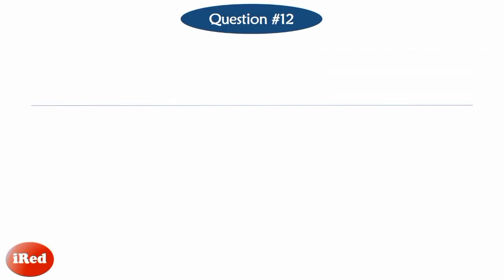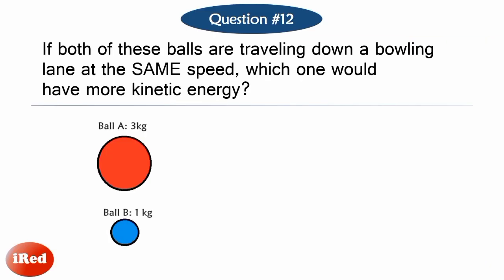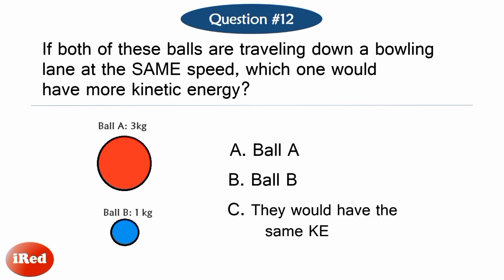Number 12. If both of these balls are traveling down a bowling lane at the same speed, which one would have more kinetic energy? Letter A, ball A. Letter B, ball B. Or Letter C, they would have the same kinetic energy.